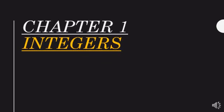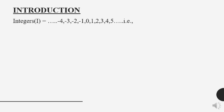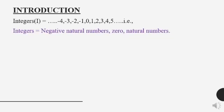Our first chapter is Chapter 1, Integers. Integers equals ...-4, -3, -2, -1, 0, 1, 2, 3, 4, 5... etc. That is, integers equals negative natural numbers, zero, and natural numbers.